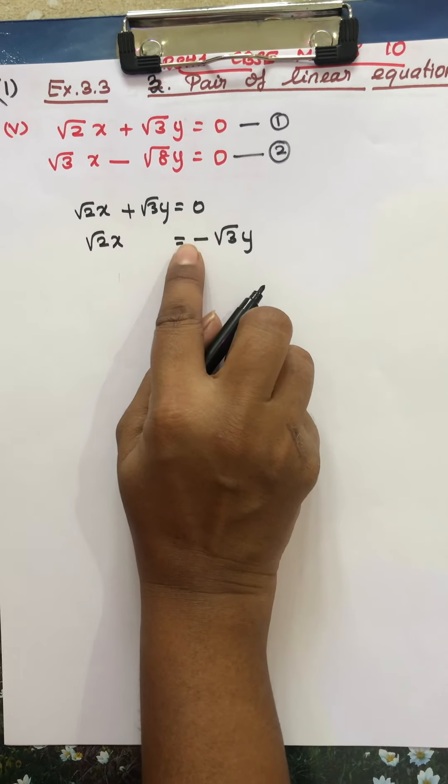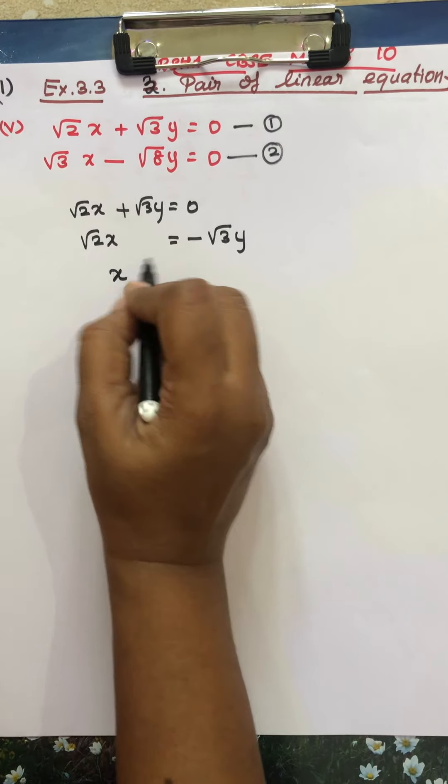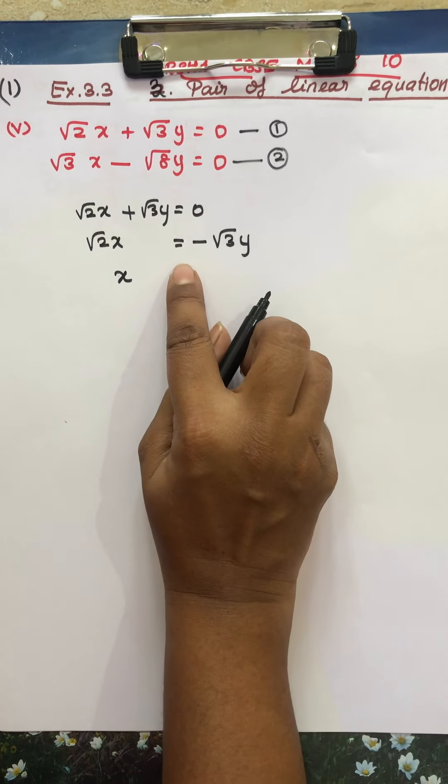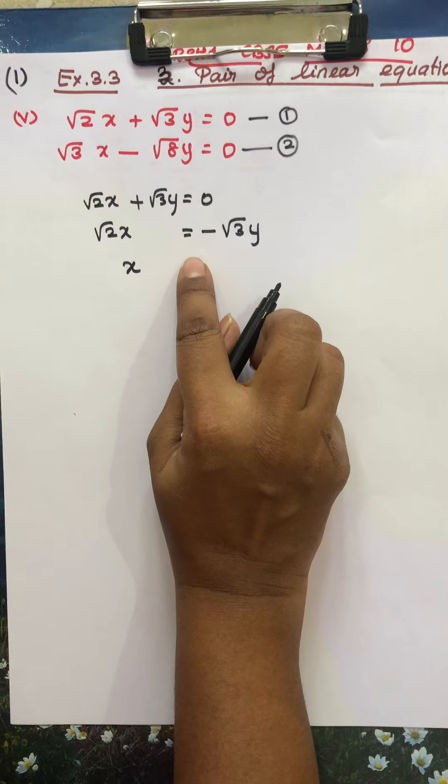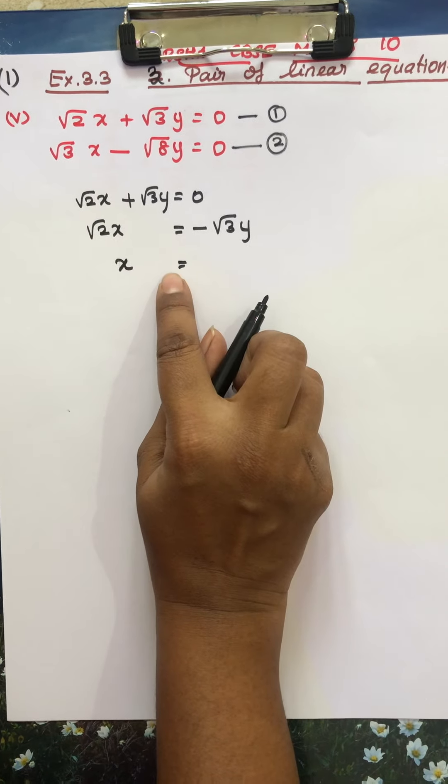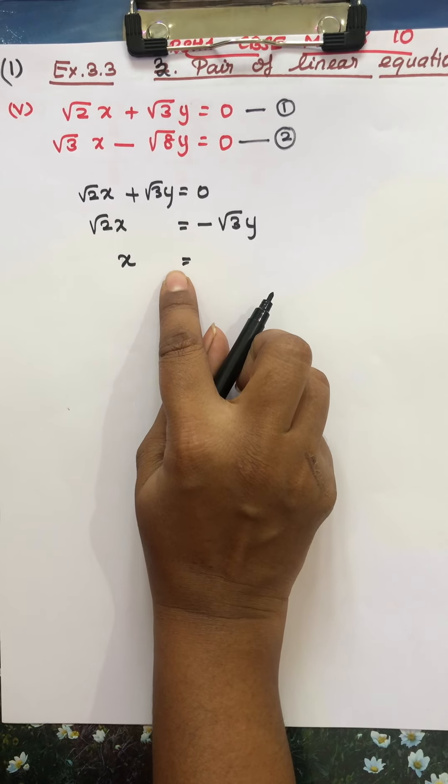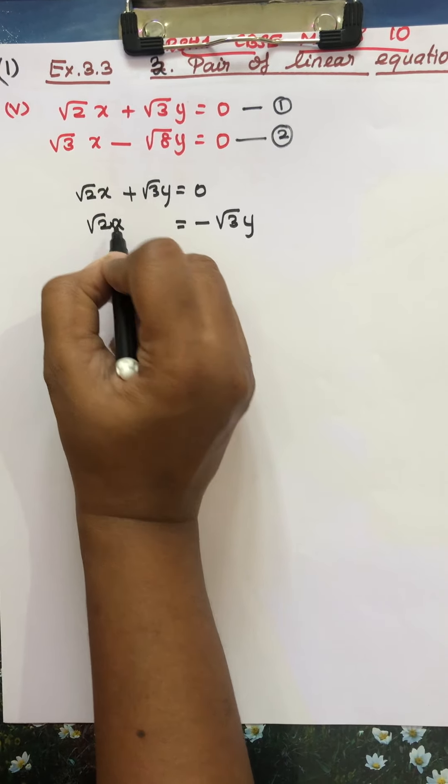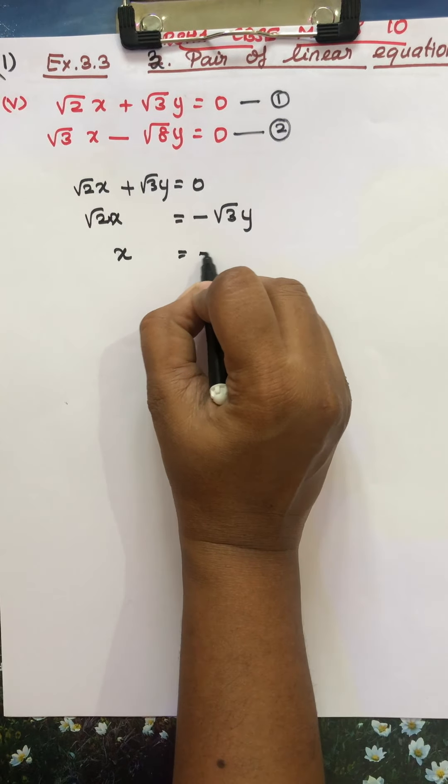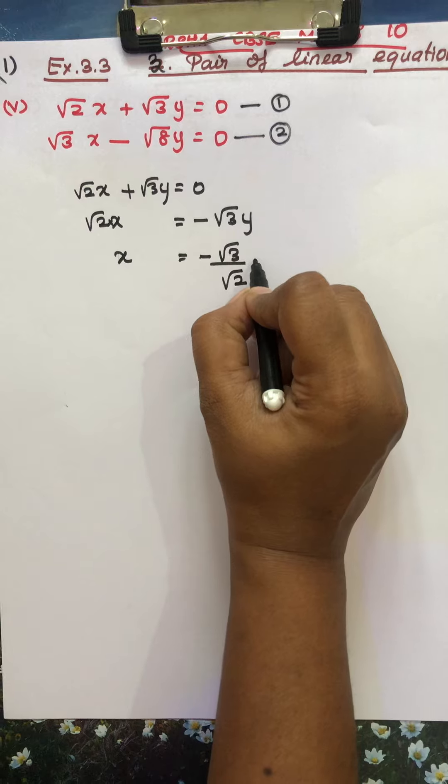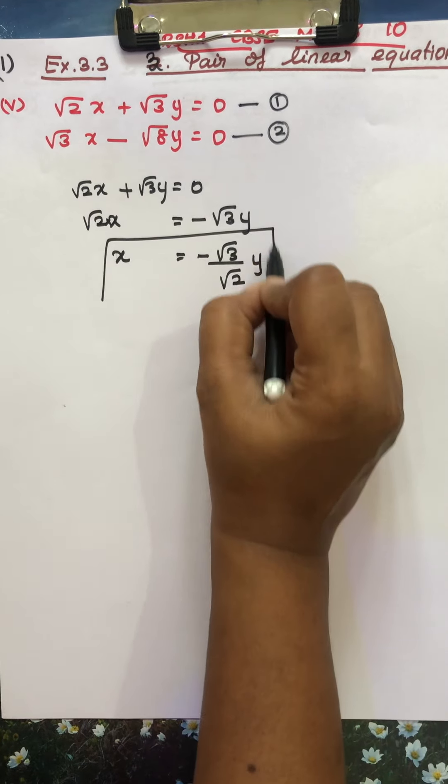Then we change the sign. See, now root 2x, how do you do it? Now this is plus. So this is, how do we do it? There is no multiplication, then division. So this is our x value.